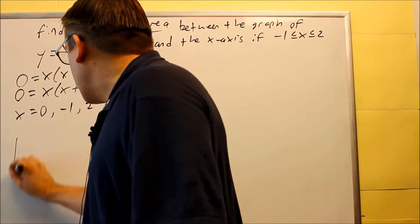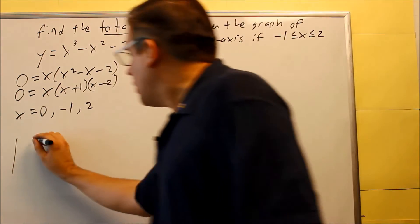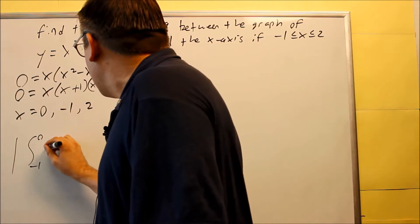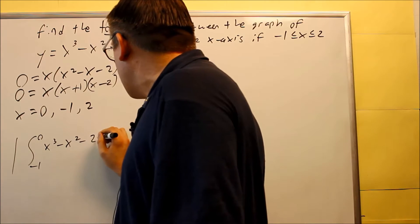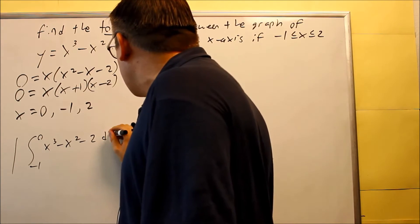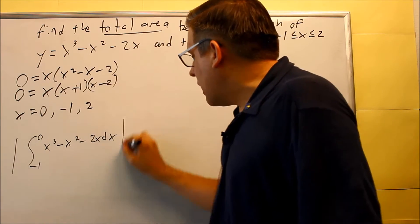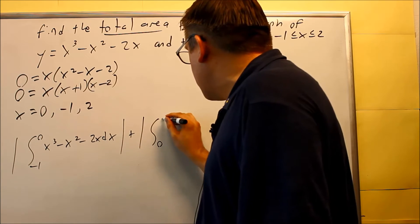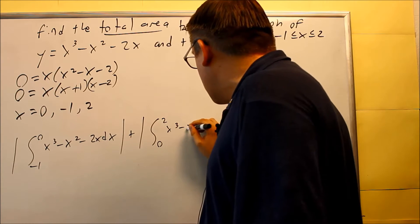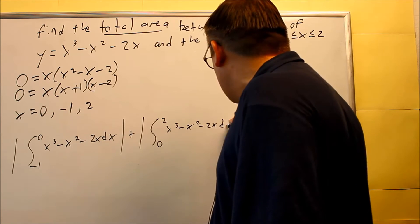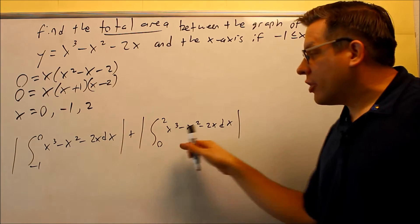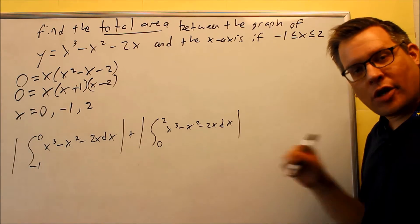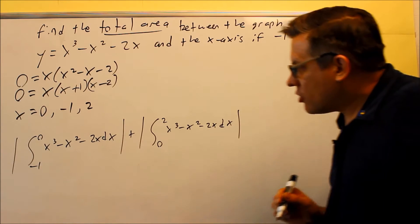So first let's set up the interval. We're going to do absolute value. We're going to do the interval from negative one to zero, x cubed minus x squared minus two x dx. And then absolute value plus another one we're going to go from zero to two, x cubed minus x squared minus two x dx. So this right here would be how you're going to set up that particular interval. We do both of these with absolute values so that way we get a positive area as a result.